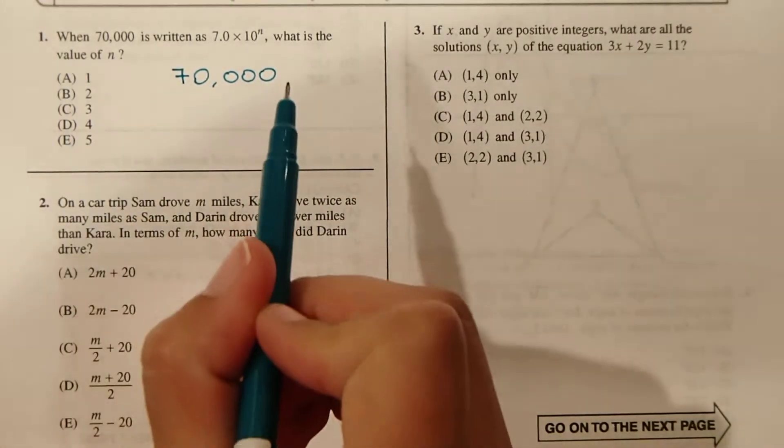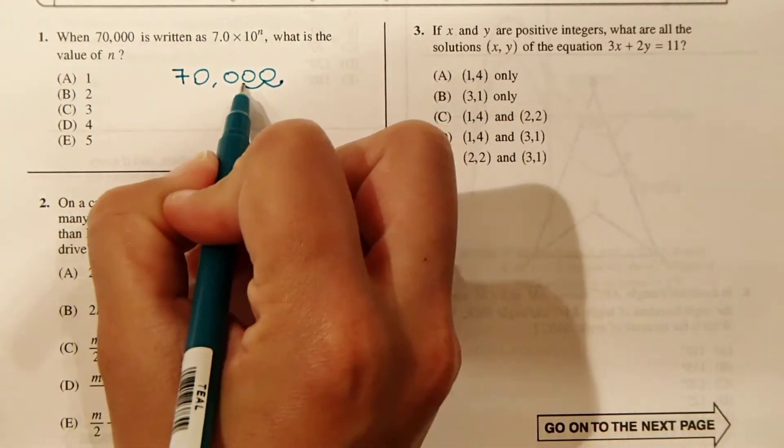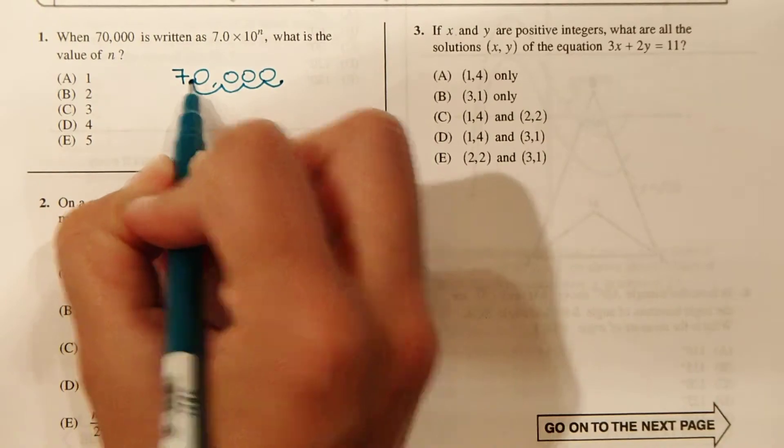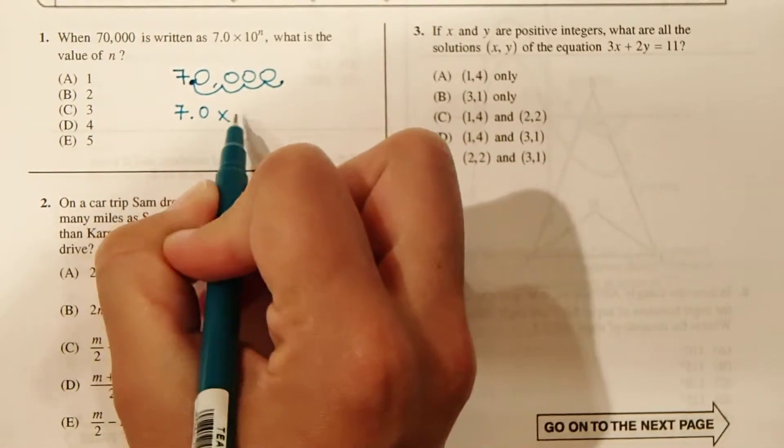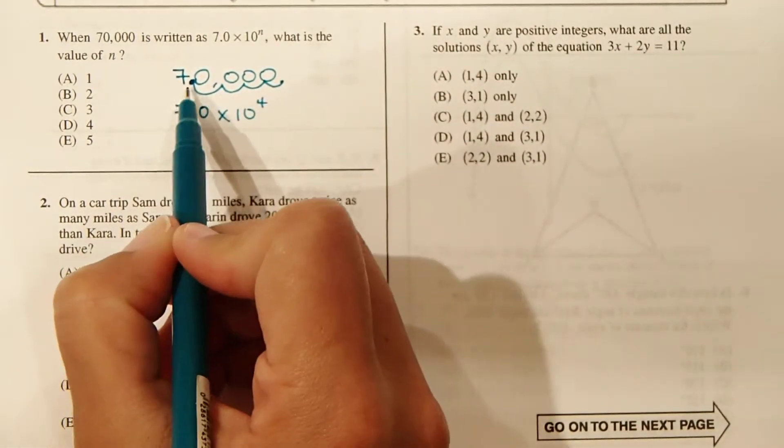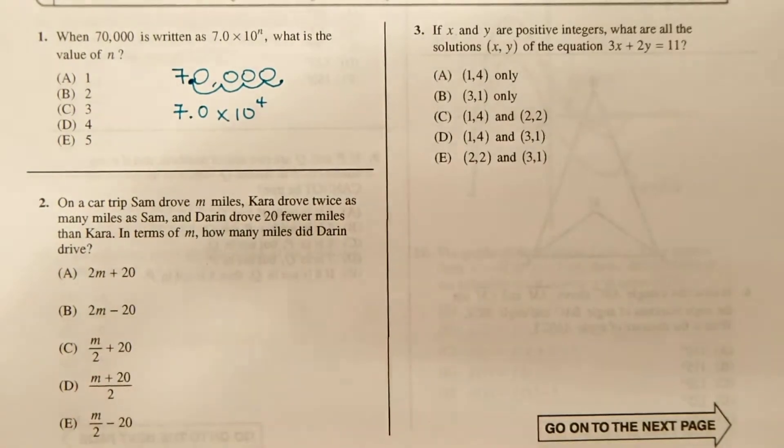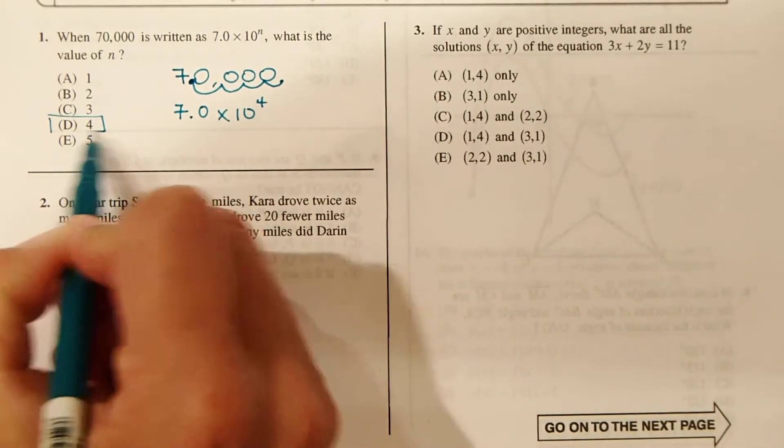So 7.0 is what we're looking for. So we're going to go back 1, 2, 3, 4. So now this is 7.0 times 10 to the 4th. It took 4 decimal places for us to get over to 7.0 from 70,000. So the n value in this case is going to be 4. So our answer is D.